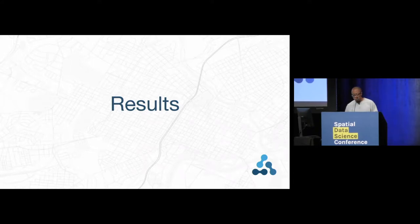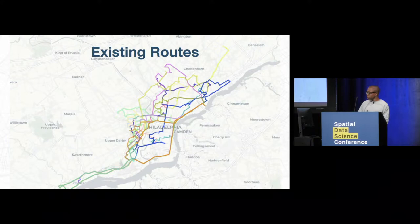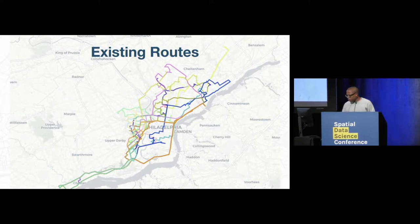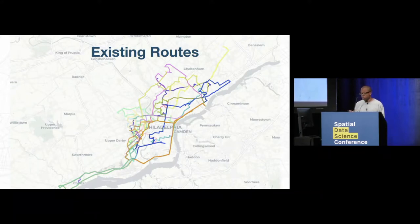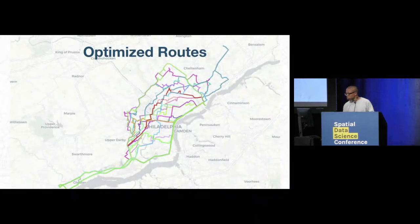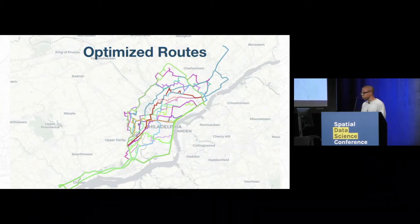I'm going to start with the results, and then, time permitting, I'll describe how we achieved them. This is a picture of the existing routes prior to our work, just to give you some idea of what they look like. You can see the label Chester at the bottom left — that's where those charter schools are. You can see routes extending all the way up into the northeast, where some students are coming from. And this is a picture of what our optimized routes look like — you're not necessarily supposed to extract specific information from these pictures, other than a general idea of what this looks like.